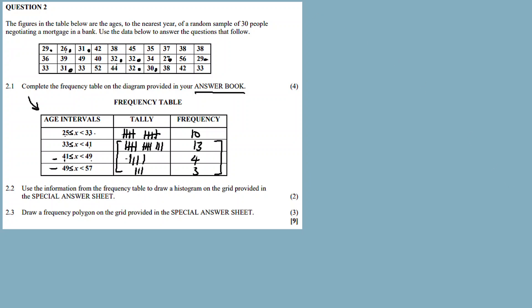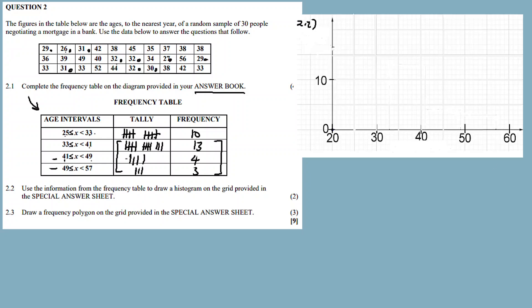I prepared a grid for this one. So this is my grid. Plot a histogram. The scale on the y-axis should be the frequency, and on the x-axis it should be the age interval.